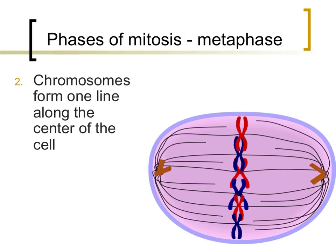After the nuclear envelope dissolves and DNA is tightly wrapped into chromosomes during prophase, the next phase, metaphase, can occur. During metaphase, spindle fibers attach to both the centrosomes and to the chromosomes. This causes all the chromosomes to form one line along the center of the cell, as the spindle fibers, the centrosomes, and the chromosomes are all pulled very tightly.